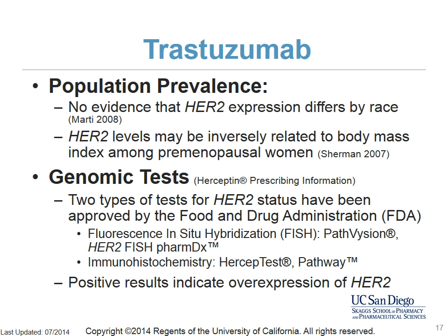Trastuzumab is indicated for adjuvant treatment of HER2-overexpressing breast cancer. HER2 testing is done in almost all women with breast cancer, not just those being considered for trastuzumab. A negative result does not rule out HER2 expression and potential benefit from trastuzumab. There are two FDA-approved genomic tests for HER2 status: fluorescence in situ hybridization (FISH) and immunohistochemistry (IHC). A positive result on either test indicates overexpression of HER2. FISH directly detects the underlying HER2 gene alteration, while IHC measures the abundance of HER2 protein. In certain cases, both tests may need to be completed.